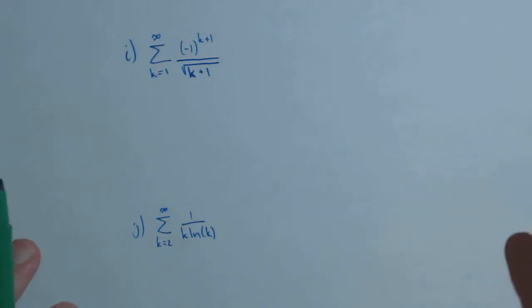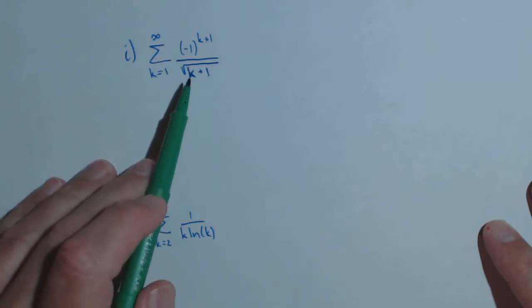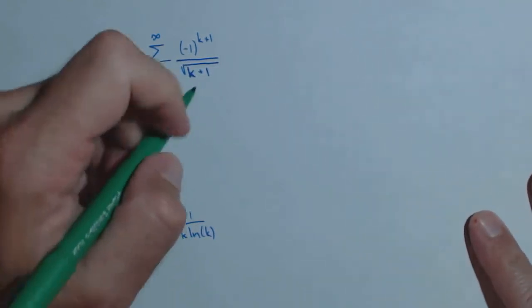So I have two series here that I need to test for convergence. Now number one, first off, right away I notice I have an alternating series, so I want to use the alternating series test.